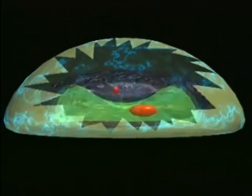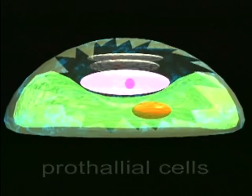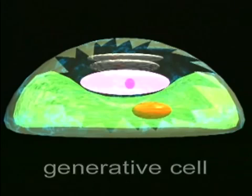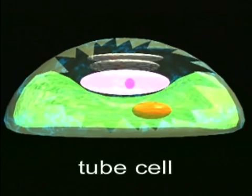Three successive mitotic divisions now take place. These create two small prothallial cells, one generative cell and one tube cell. These cells represent the immature male gametophyte. This entire structure consisting of the external wall and the male gametophyte is known as the pollen grain.